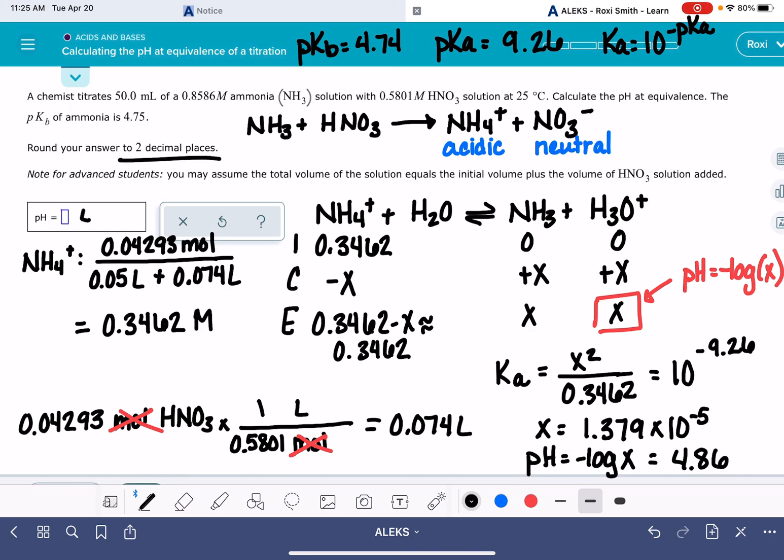Alex wants two decimal places. 4.86. Good luck.